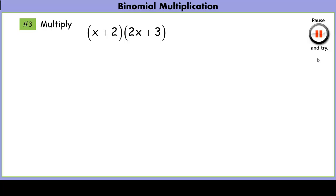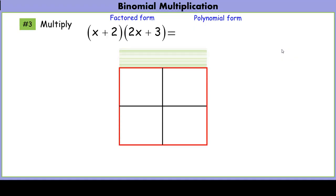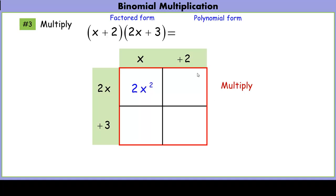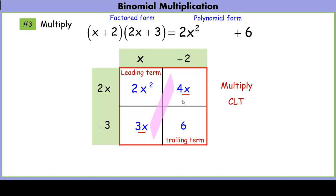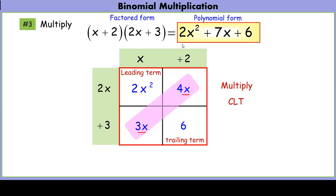Let's try another one. Going from factored form to polynomial form using our area model with x plus 2 and 2x plus 3. Multiplying each sub-area: x times 2x is 2x squared, 2 times 2x is 4x, x times 3 is 3x, and 2 times 3 is 6. We combine like terms — leading term is 2x squared, trailing term is 6, and adding the two linear terms 4x plus 3x gives 7x. The equivalent polynomial form is 2x squared plus 7x plus 6.